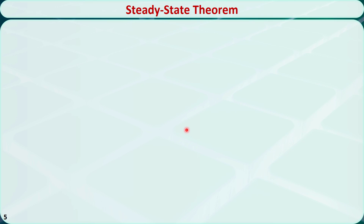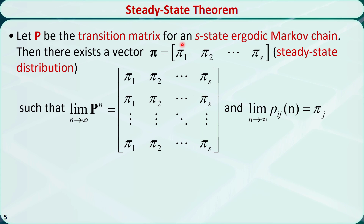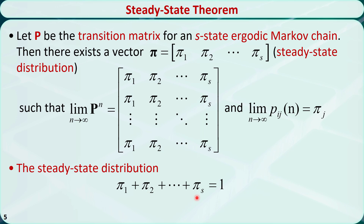Now let me introduce the steady state theorem. Given enough time, every ergodic Markov chain will reach the steady state. Let P be the transition matrix for an S-state ergodic Markov chain. Then there exists a vector pi — from pi 1 through pi s — called the steady state distribution or equilibrium distribution, such that as n approaches positive infinity, the n-step transition matrix equals a matrix with the pi vector repeated for s rows, and the n-step transition probability from i to j equals the j-th element of pi. The sum of elements in the steady state distribution is 1. When n approaches positive infinity, the steady state distribution satisfies: pi equals pi times the one-step transition matrix P.